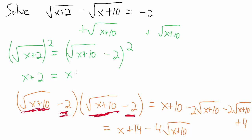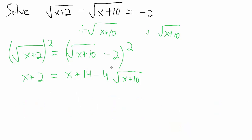So after squaring both sides we have: x plus 2 equals x plus 14 minus 4 times the square root of x plus 10. This is actually good — we now have only one radical. We repeat the process: isolate the radical, get it by itself on one side, put everything else on the other side, then square both sides. Notice the x cancels, so let's subtract x from both sides, giving us 2 equals 14 minus 4 times the square root of x plus 10.